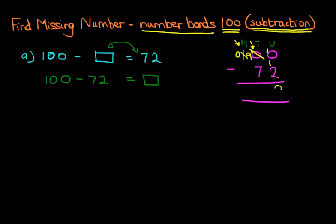10 minus 2 is 8. On to the tens, we've got 9 minus 7. The answer is 2. The hundreds are 0. So we don't need to write anything there. Therefore, 100 minus 72 is 28. We can write this in our original question. 100 minus 28 equals 72. That is the missing number, 28.